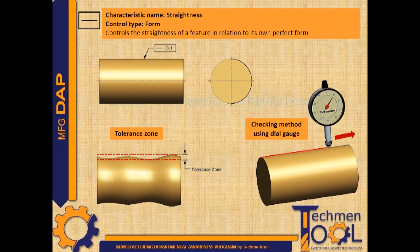In the given example, the tolerance zone of 0.1 of a cylindrical feature will be measured using a dial gauge by moving its plunger on the surface of the feature in a straight line. The deflection of the dial gives the actual straightness value, and that value should be within the tolerance zone.